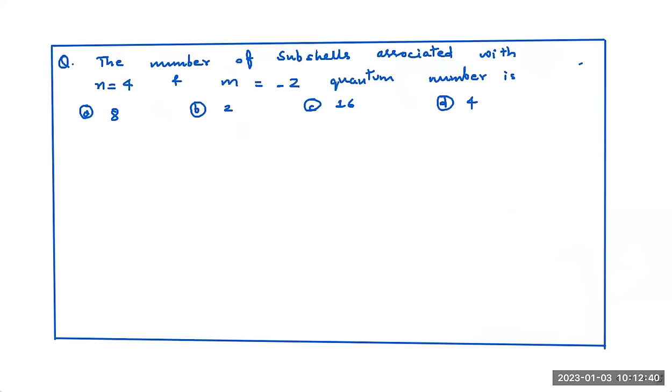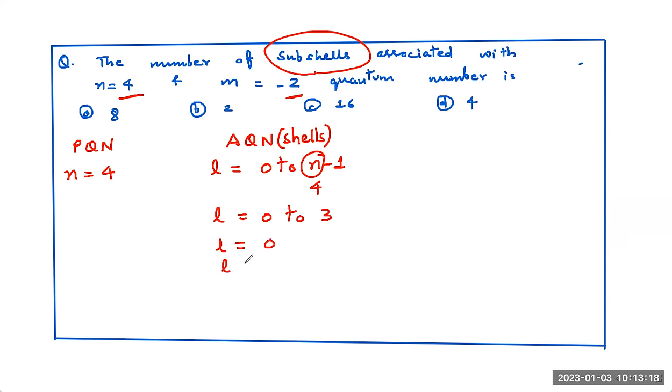The number of subshells associated with? Very simple question. See. The number of subshells associated with N4M minus 2. See. When N is 4, I mean principal quantum number is 4. So, azimuthal quantum number which indicates the shells is L and L is 0 to N minus 1 where N is principal quantum number 4. So, 0 to N minus 1 becomes 0 to 3. So, L can be 0, L can be 1, L can be 2, and L can be 3. So, number of subshells. This indicates the subshells, not the shells. This indicates the shells.